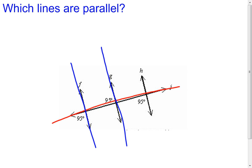I'll totally ignore line h for now — it doesn't even exist. I look at the two angles and ask myself: are these same-side interior angles? Alternate interior angles? Alternate exterior angles? Corresponding angles? I look at them and none of those angle pairs apply, so I can't just say that because they're congruent the lines must be parallel. I may need to go another step further.